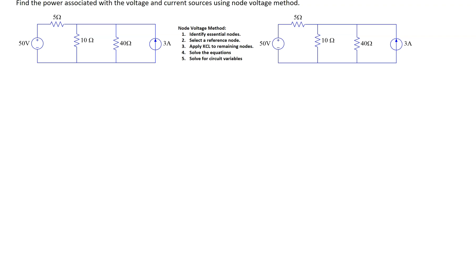This given circuit has one independent voltage source, one independent current source, and three resistors. The first step is to identify essential nodes in the circuit. Recall that an essential node is a node where three or more circuit elements join. Looking at this conductor here, four circuit elements are joining, so this is an essential node, indicated by drawing a node here.